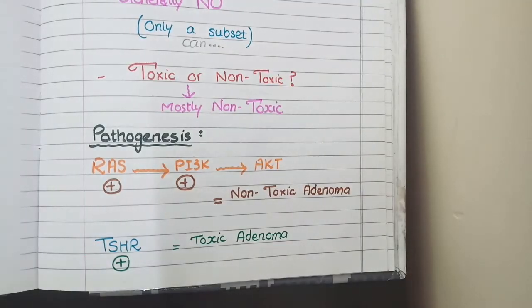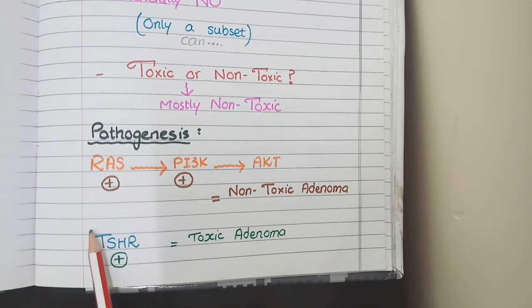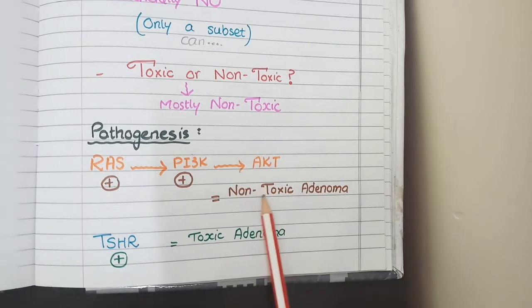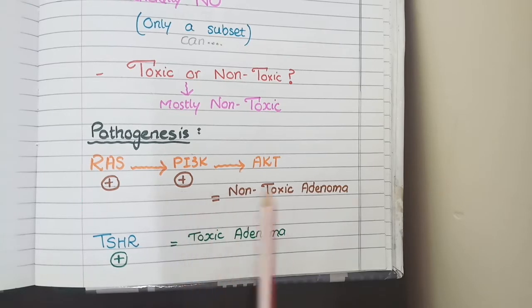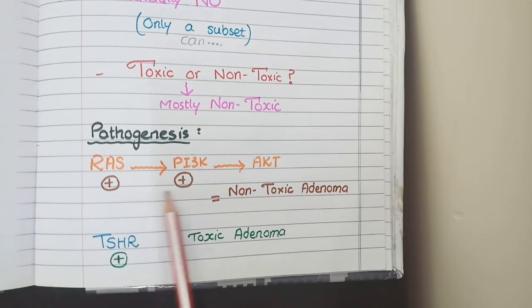Regarding the pathogenesis of follicular adenoma, it can occur by one of two pathways. In cases of non-toxic adenomas, mutations occur in the RAS PI3K AKT signaling pathway, which is a pathway that signals cells to proliferate.